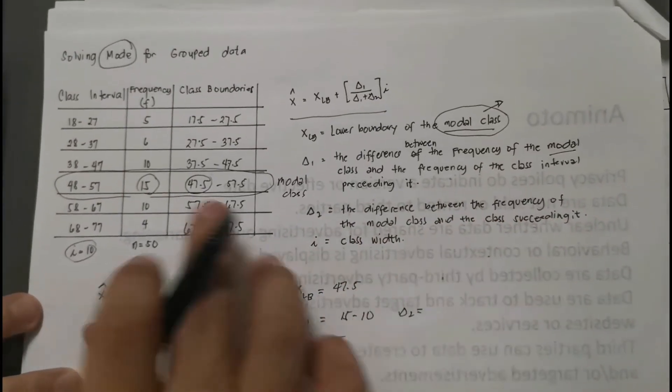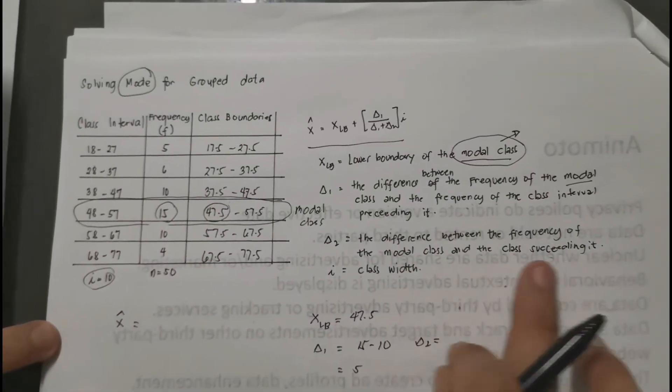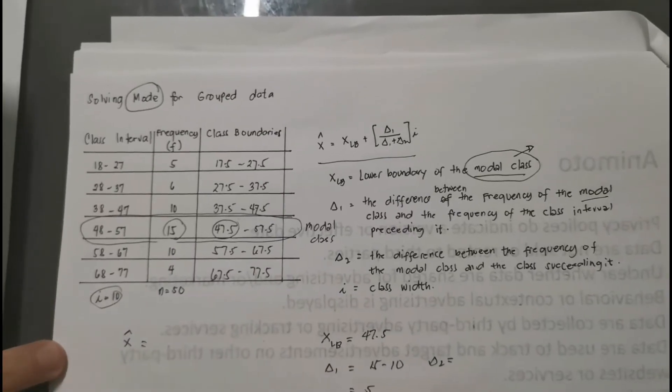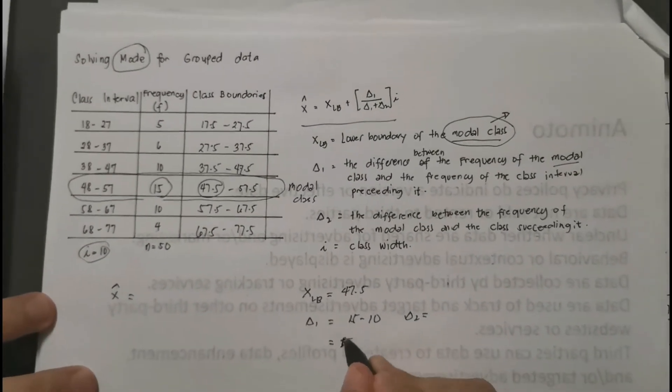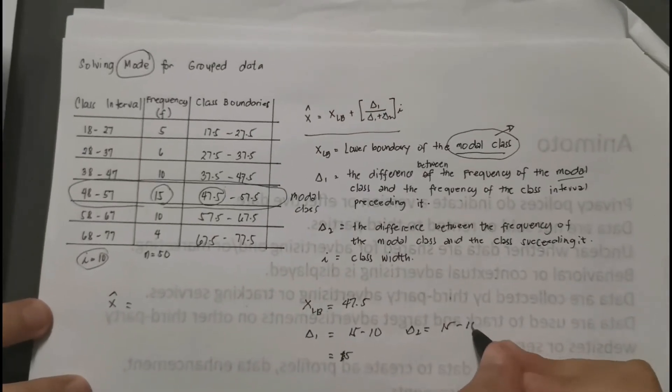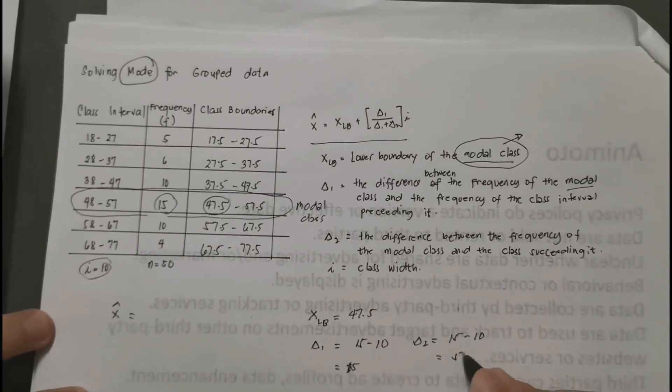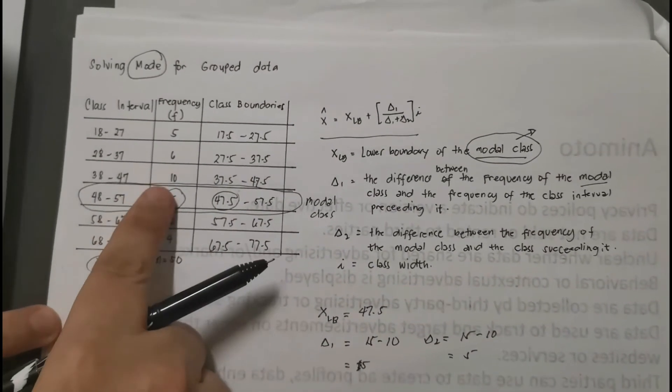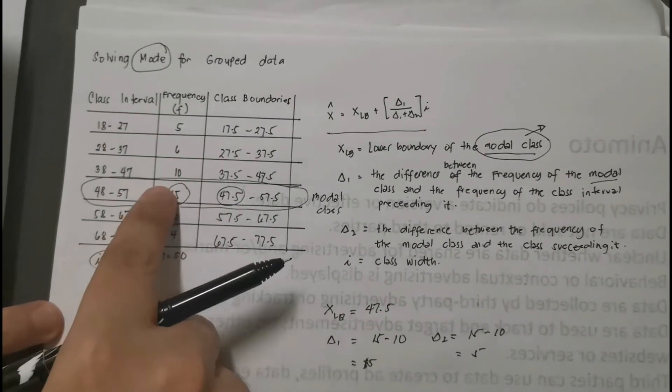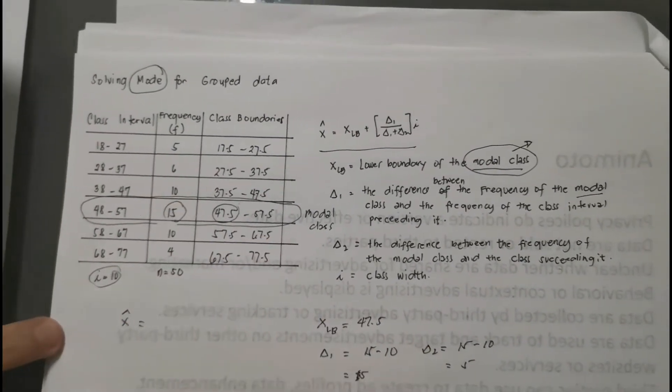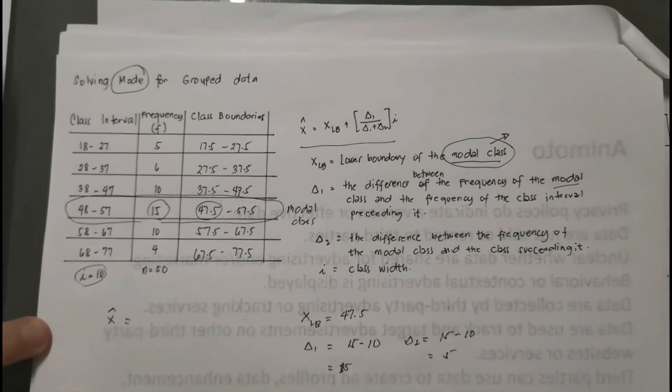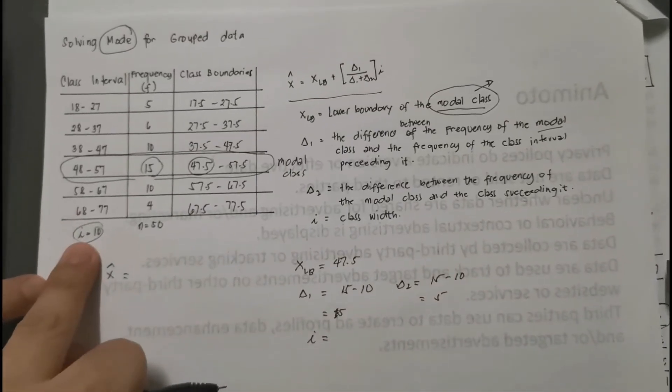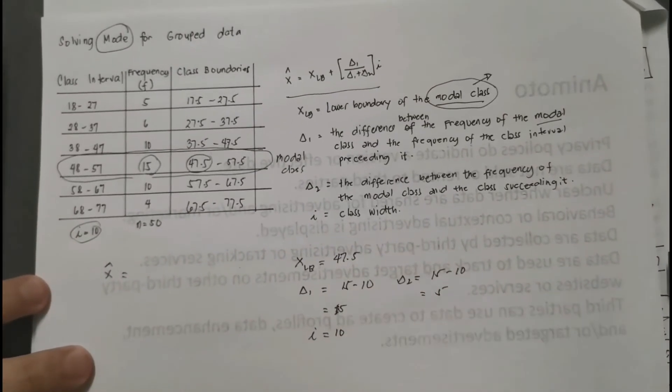For delta 2, it says here the difference between the frequency of the modal class, which is 15, and then the class succeeding it, which is, you notice, it's also 10. So that's why we will have 15 minus 10, so you have 5. Our delta 1 and delta 2 happens to be the same. It's because the frequency before and after our modal class is the same, so that's why we have the same result for delta 1 and delta 2. And last variable is i. Of course, in our table, our class width is 10.